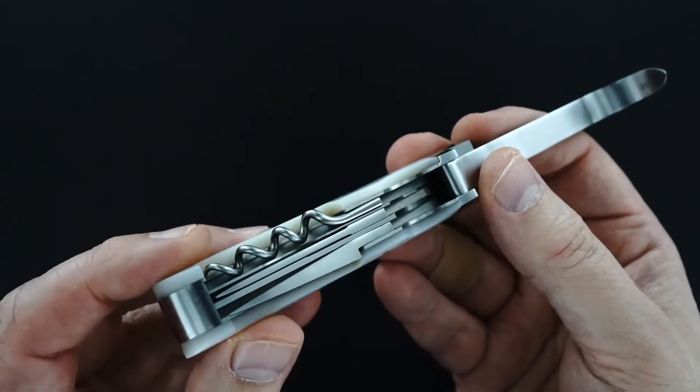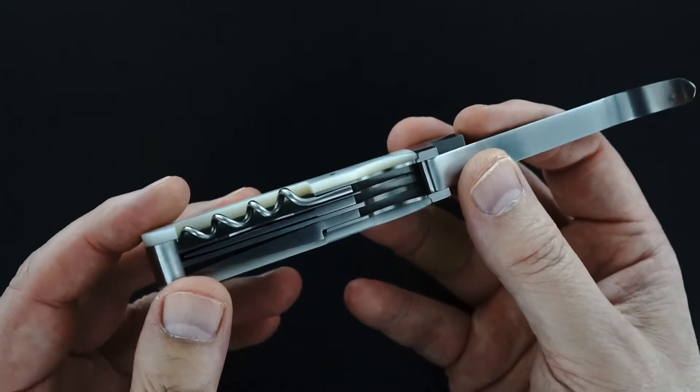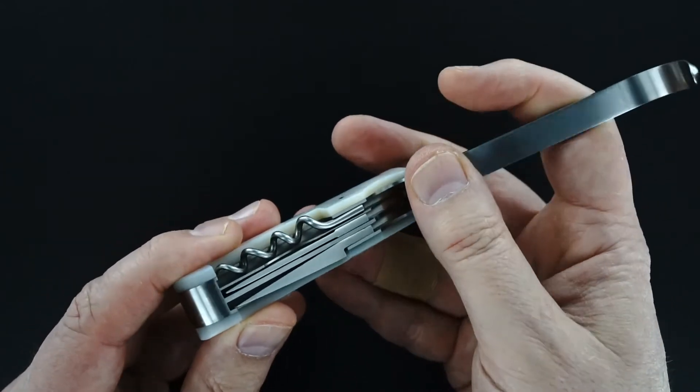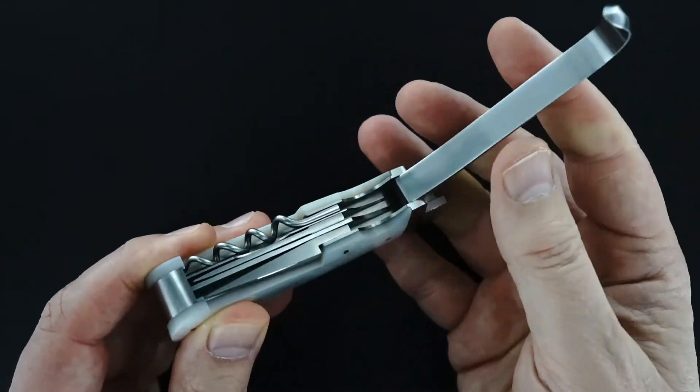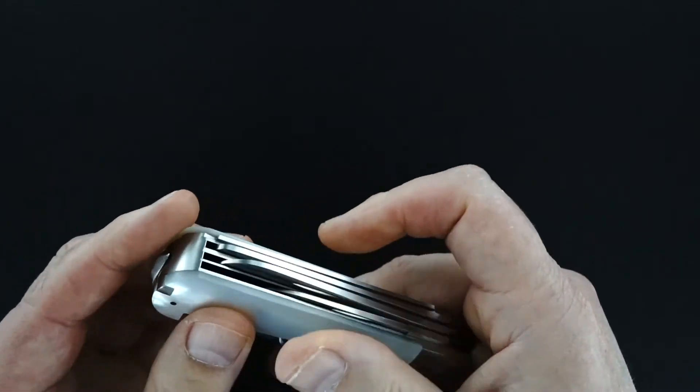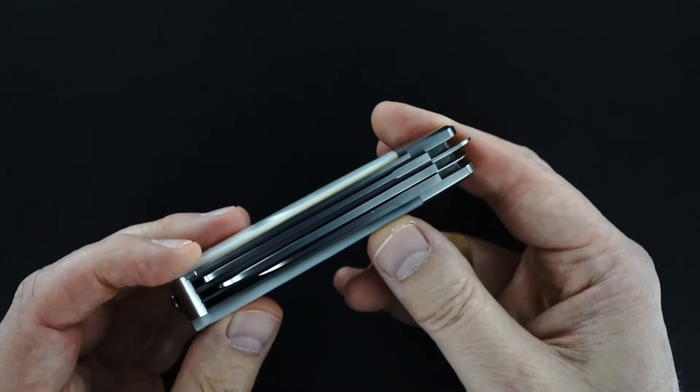There are liners between each blade on the positive side that prevent the blades from rubbing together and scratching each other. Same on the back side.